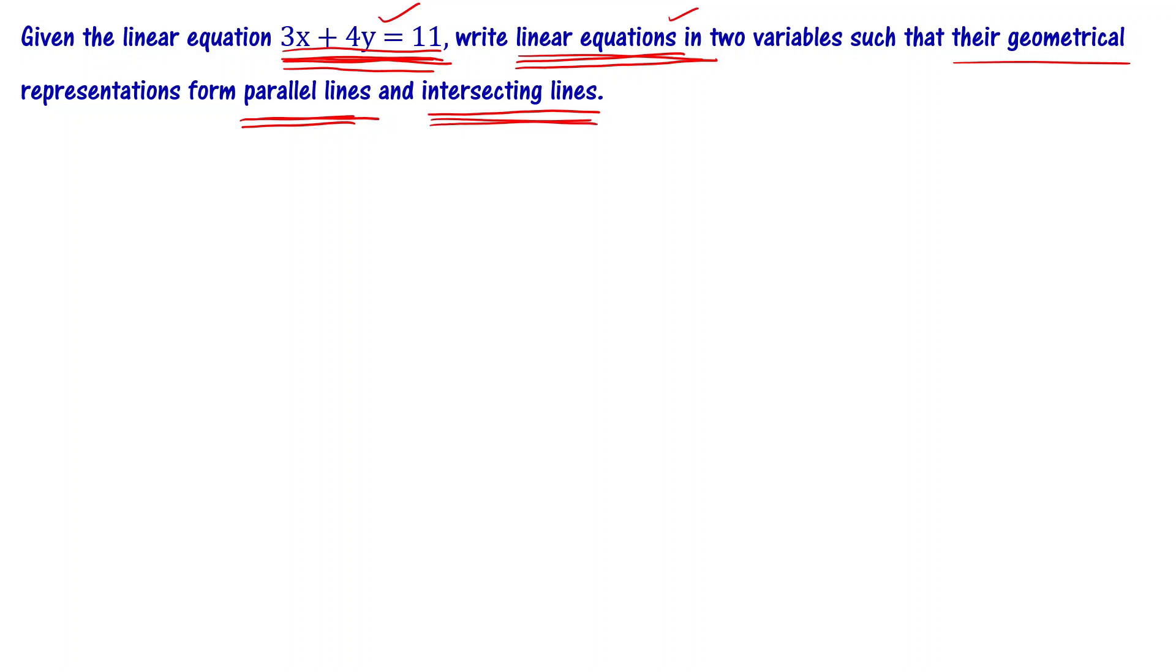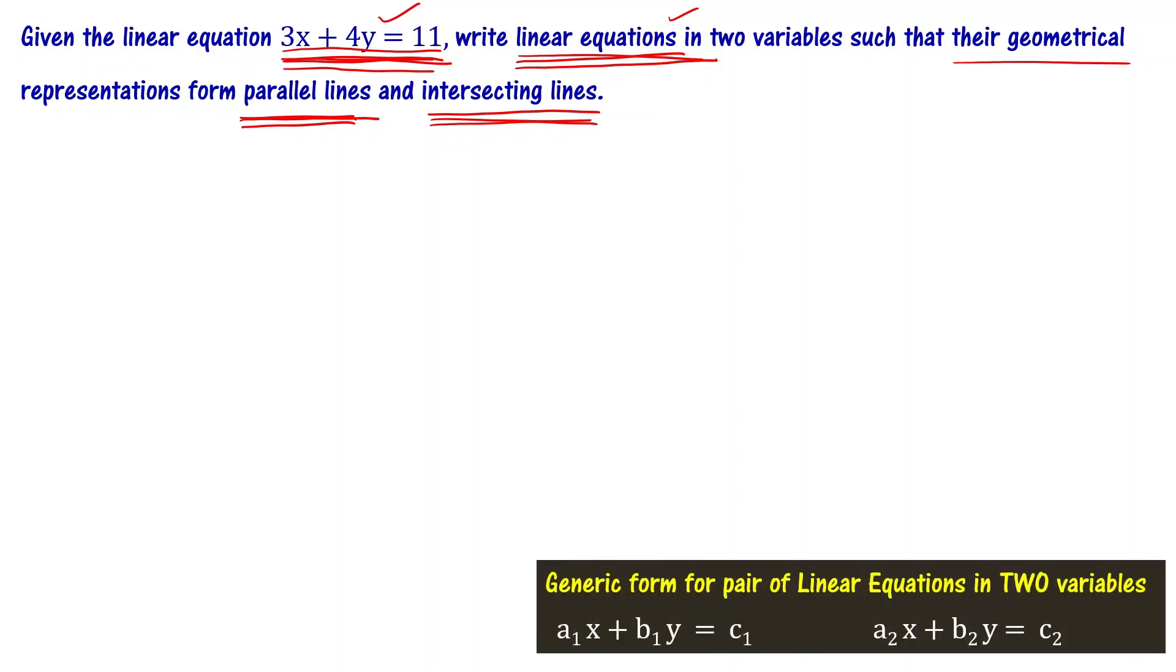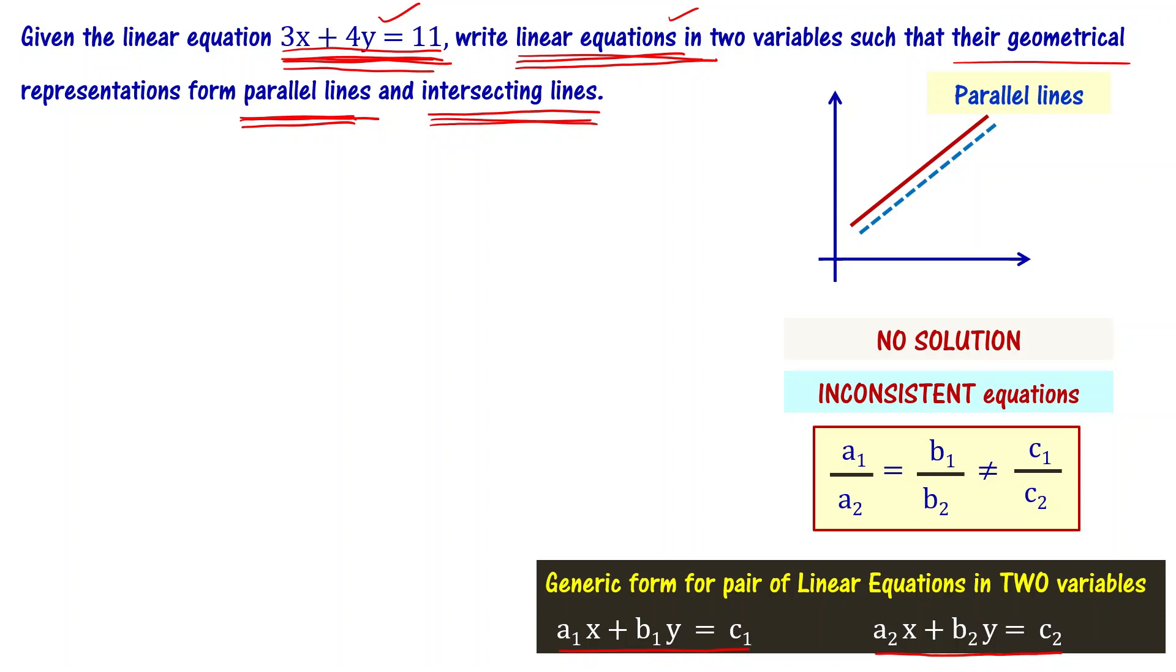First, we need to find another equation a2x plus b2y equal to c2 such that the lines are parallel. For parallel lines, a1 by a2 equal to b1 by b2, that is not equal to c1 by c2. Comparing with the first equation 3x plus 4y equal to 11, we have a1 equal to 3, b1 equal to 4, and c1 equal to 11.